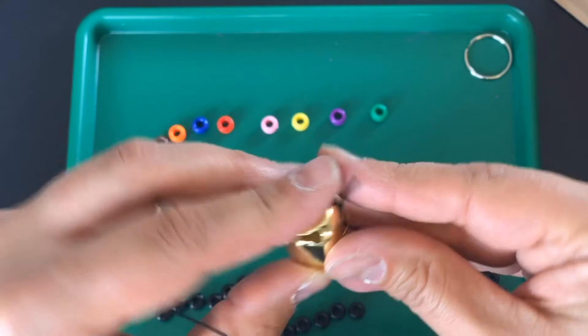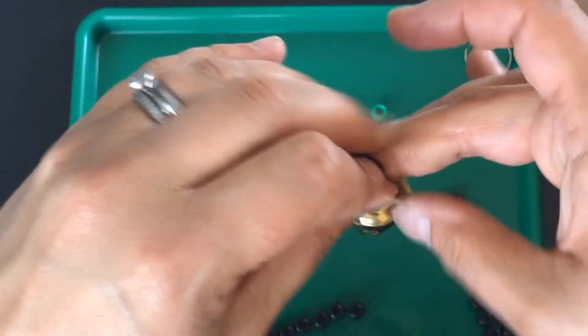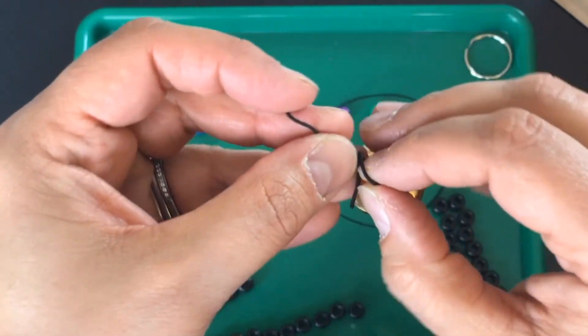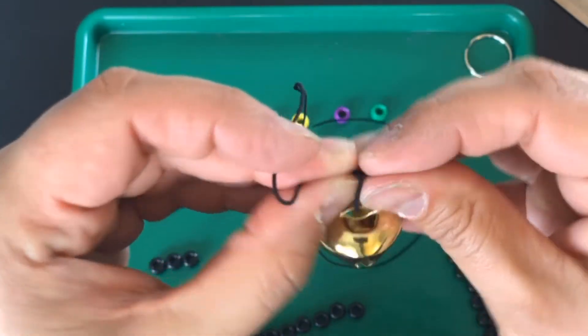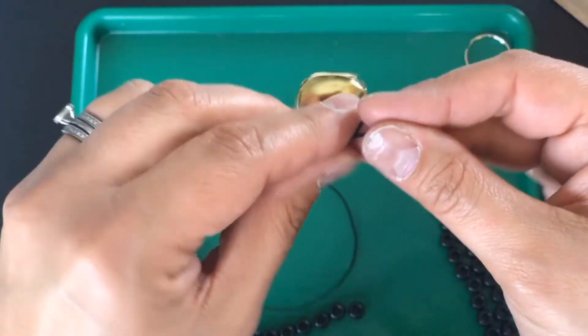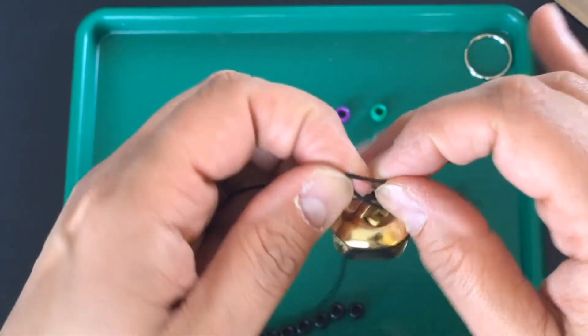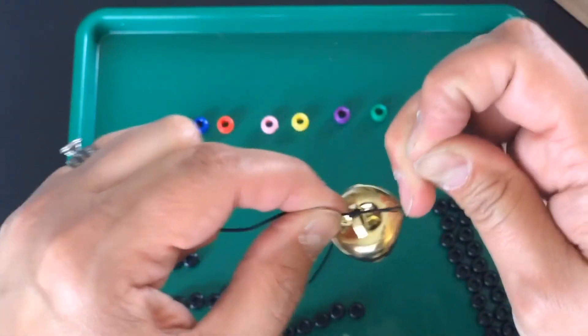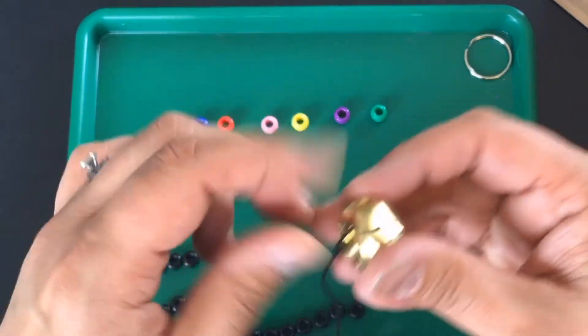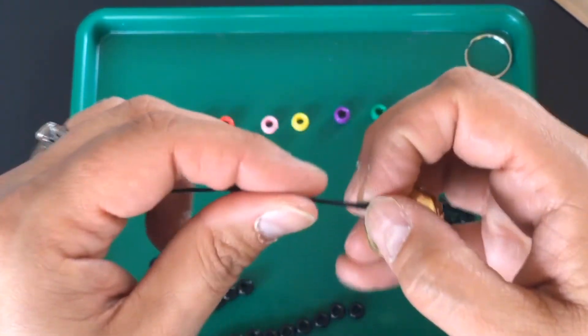What we're going to do is take our cord and thread it onto the jingle bell and tie a knot. Sometimes knots are tricky and it's okay to ask for an extra set of hands. I'm going to tie two knots just to make sure it's on there secure. It's okay if you want to ask someone else in your house to help you out.